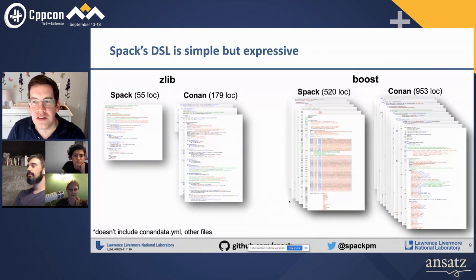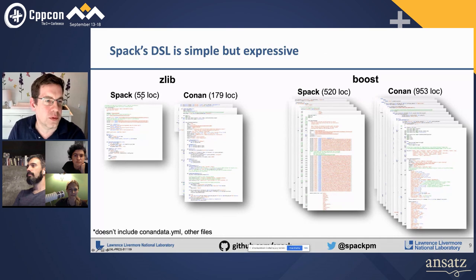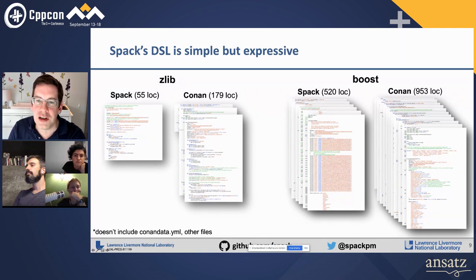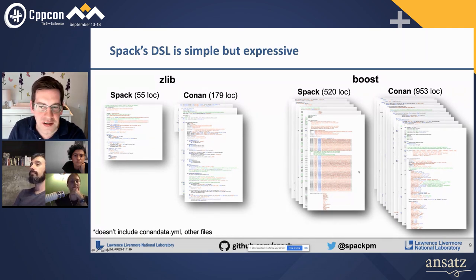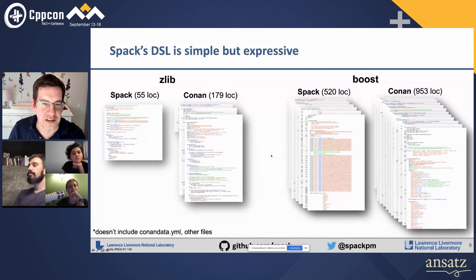Spack packages tend to be quite a bit shorter than, say, Conan. For example, zlib is about 55 lines of code in Spack and much longer in Conan. Boost, a complicated package, is about half as long in Spack as in Conan — and this includes all the versions and things that go in separate files in some other package managers.